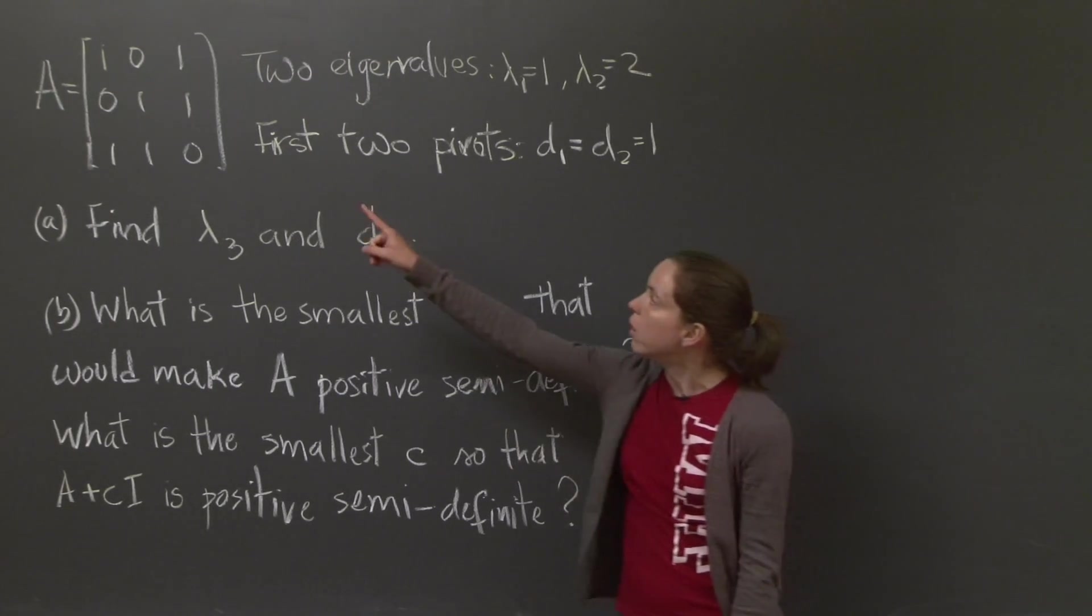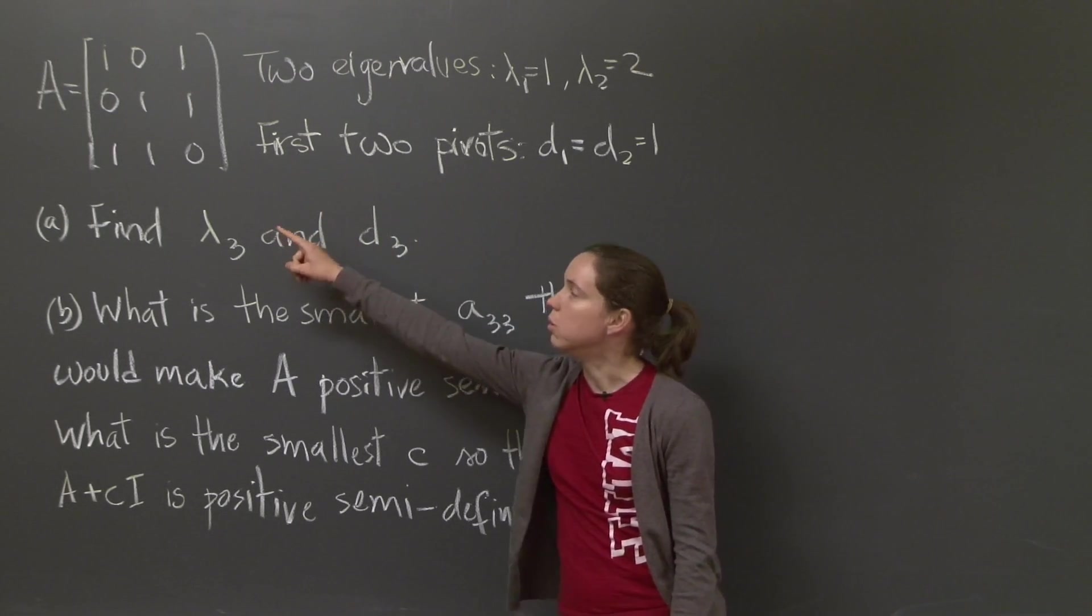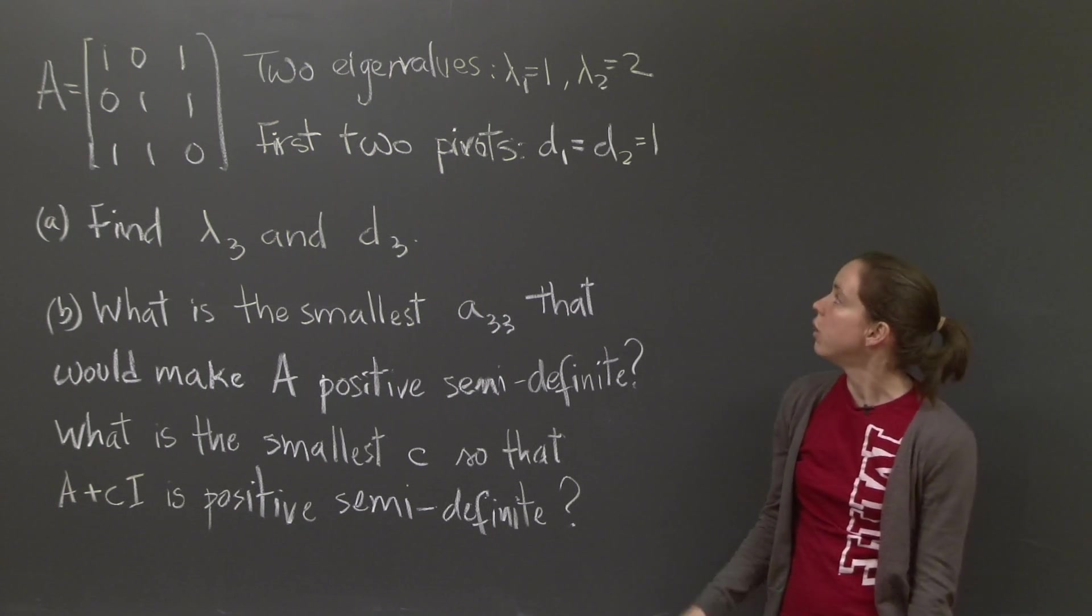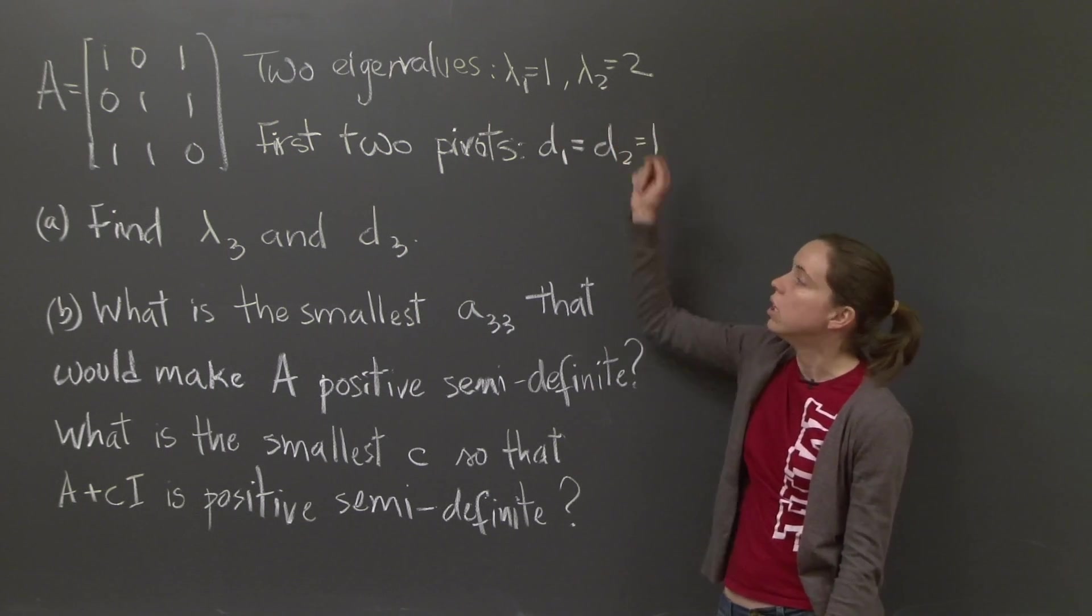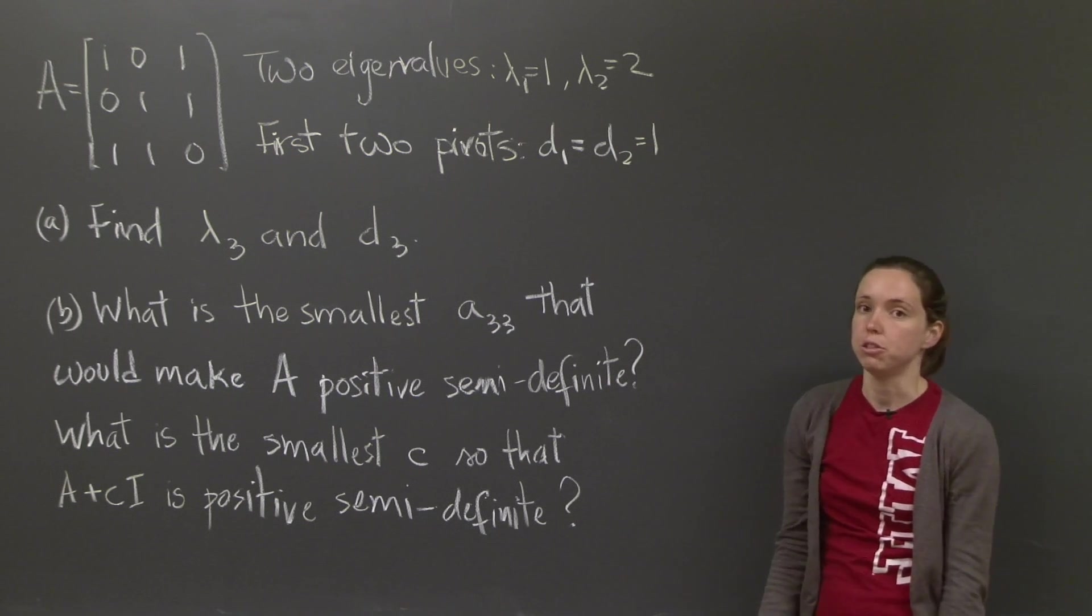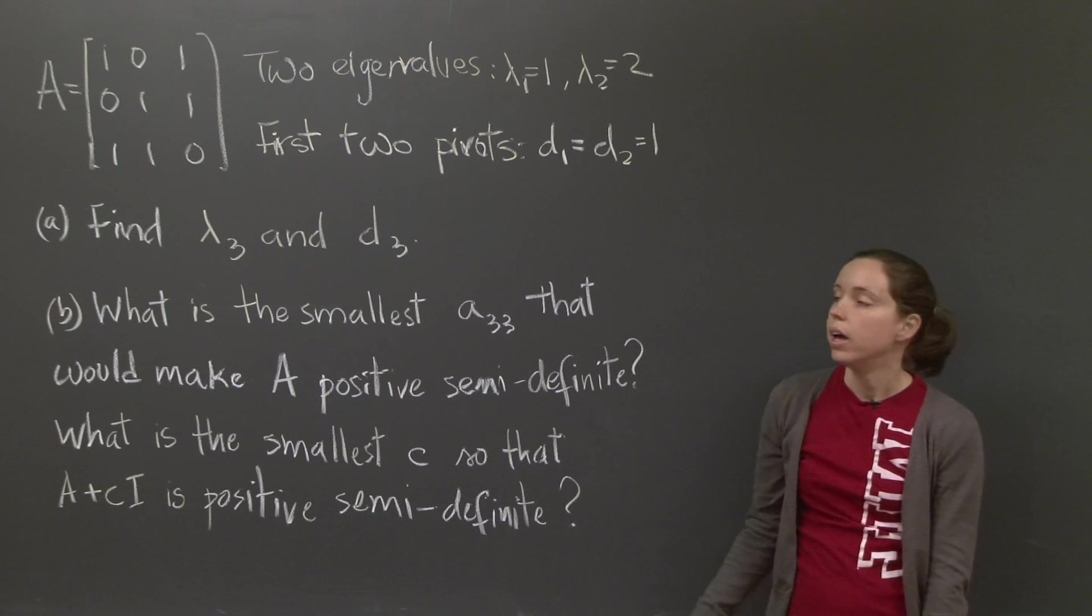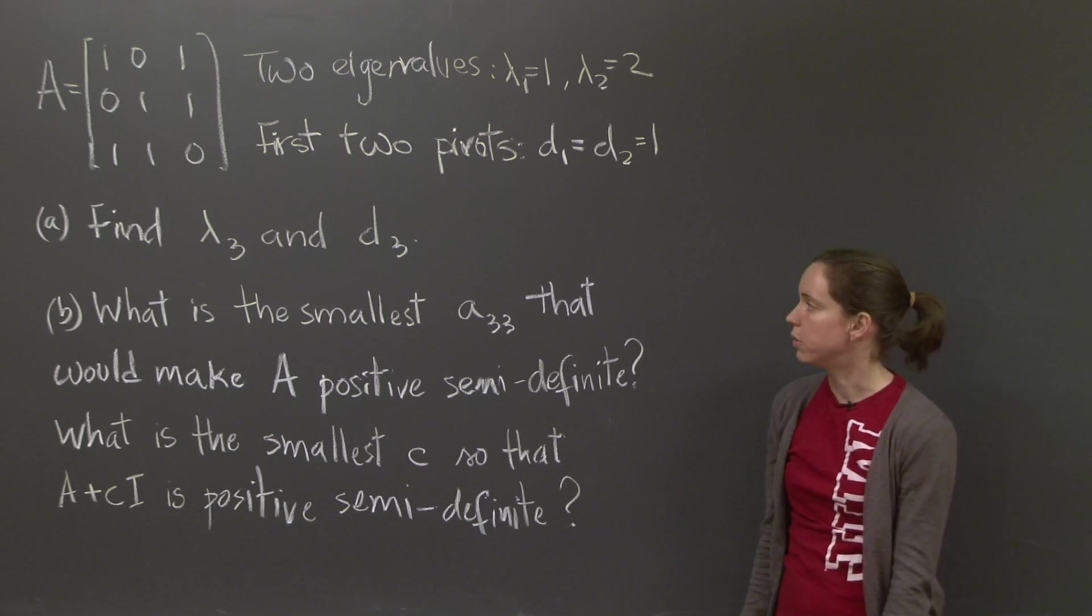It's about a matrix A, 1, 0, 1, 0, 1, 1, 1, 1, 0. And we know that this matrix has two eigenvalues, 1 and 2. And we also know that if we do elimination, the first two pivots will be 1 and 1. And here are two questions about this matrix.